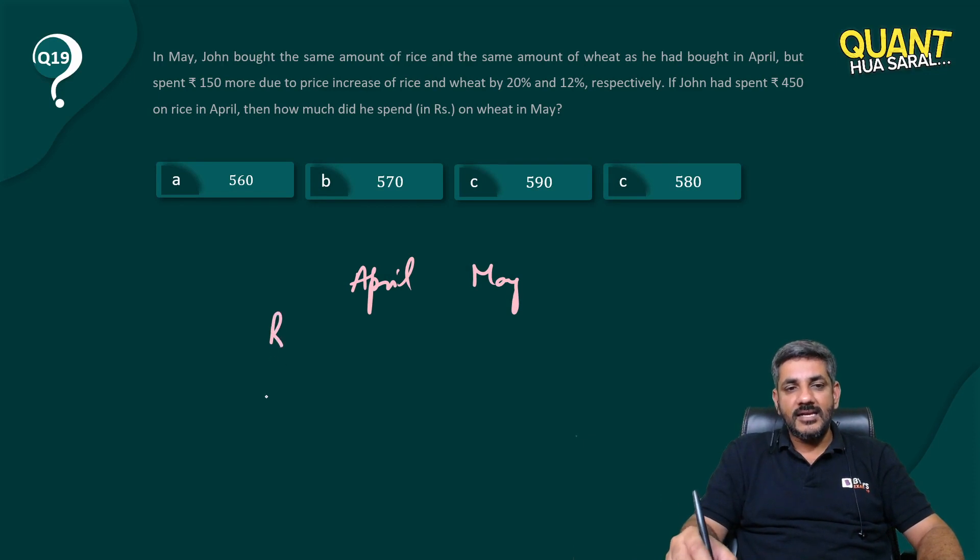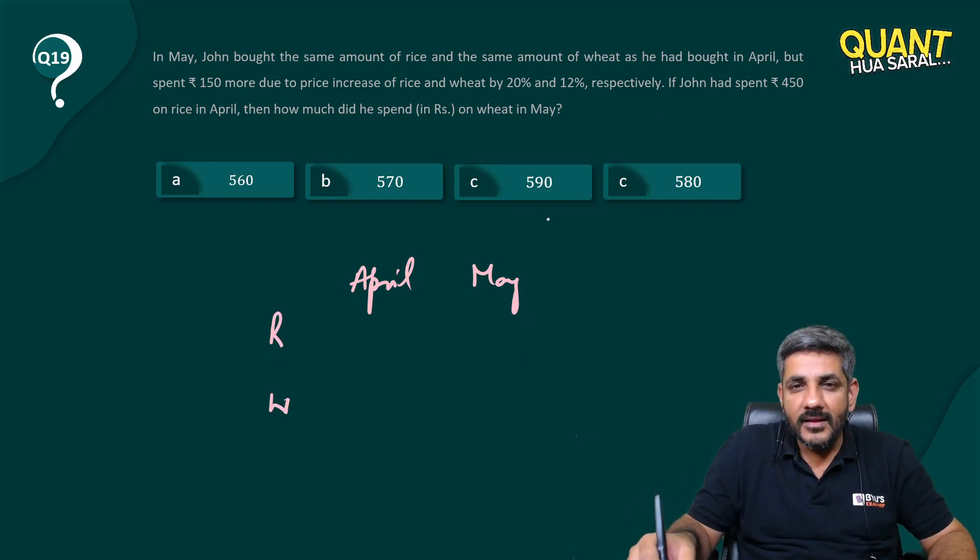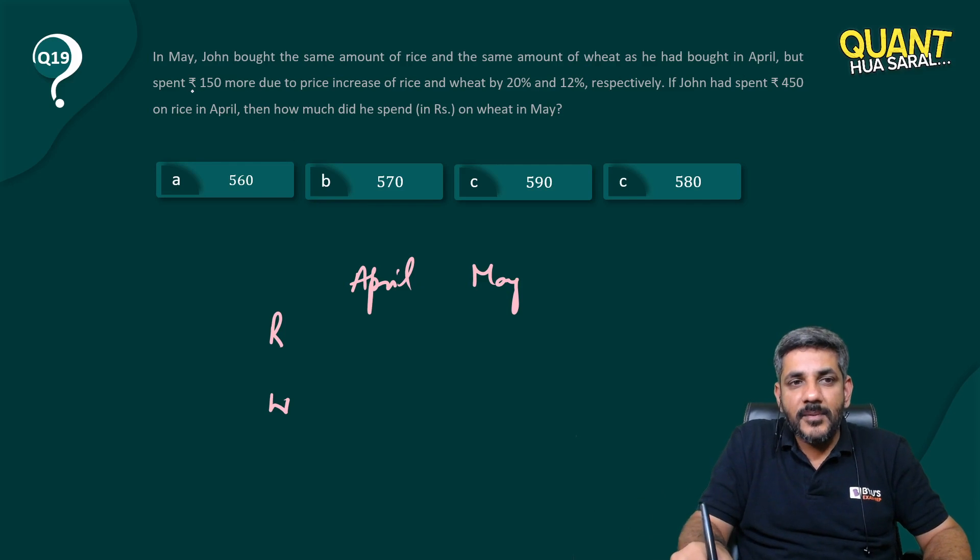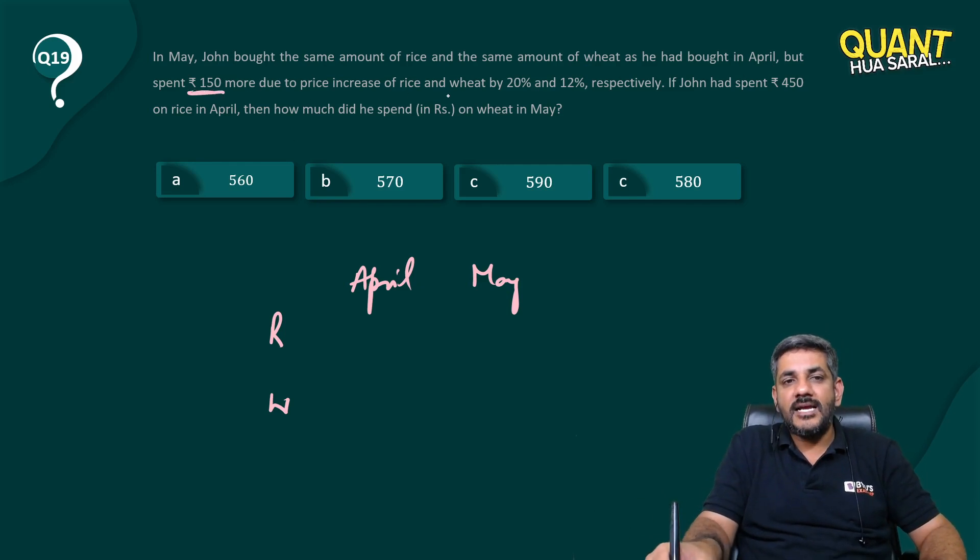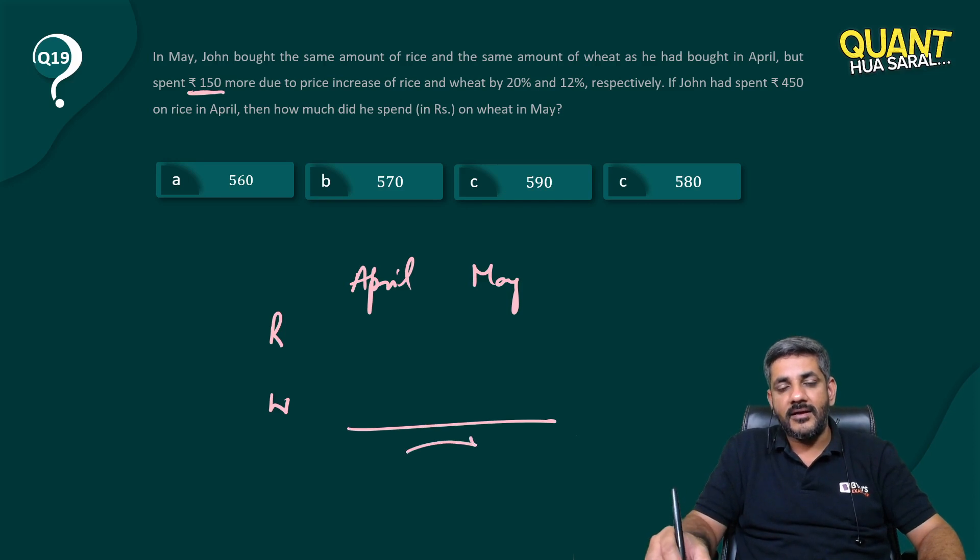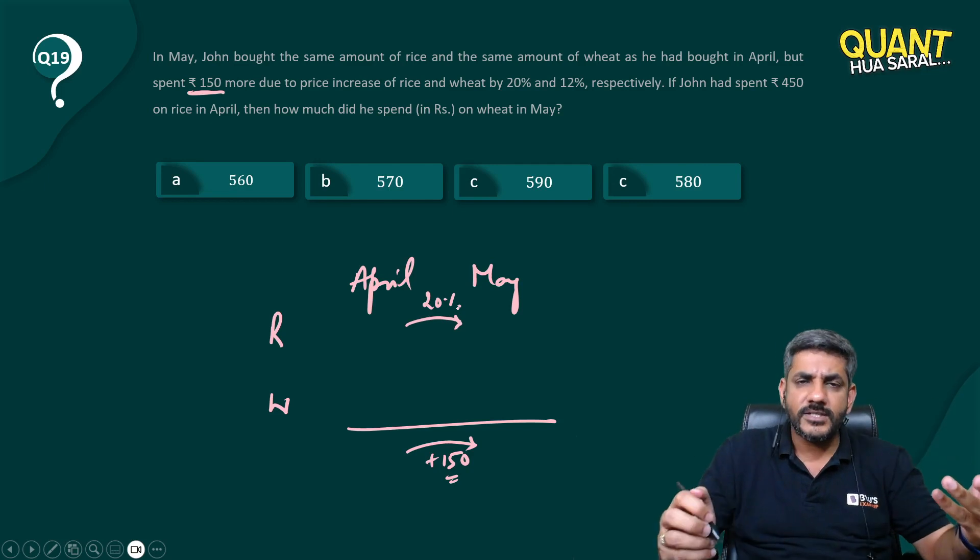he says that he spent 150 rupees more due to price increase of rice and wheat by these percentages. So in May, you have spent 150 rupees more. The price of rice increased by 20 percent. Because I am doing these questions aptitude way, even while doing questions during the exam time, this is always there in my mind.